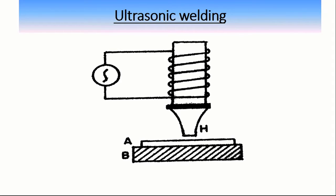The hammer is made to vibrate ultrasonically. As a result, it presses the two metal sheets very rapidly and molecules of one metal diffuse into the molecules of the other.